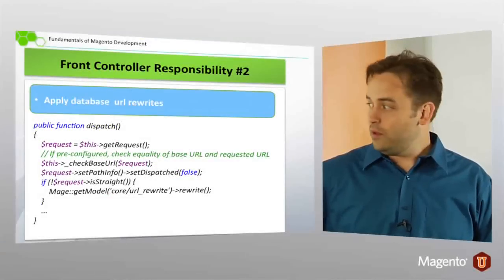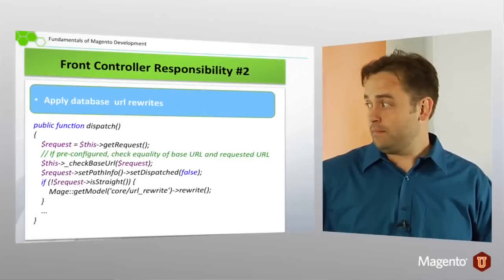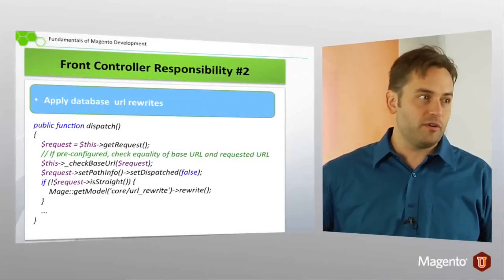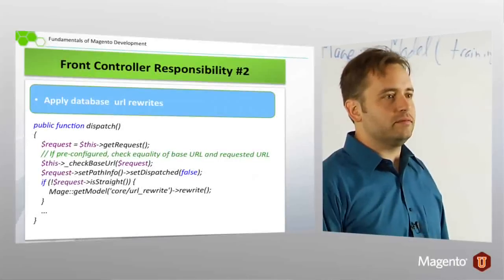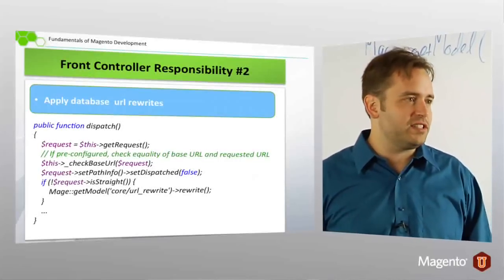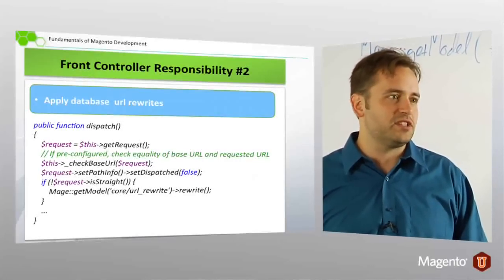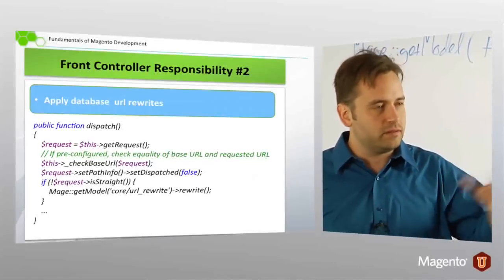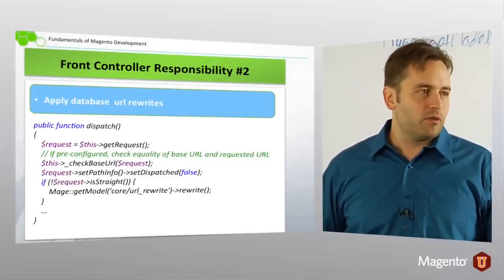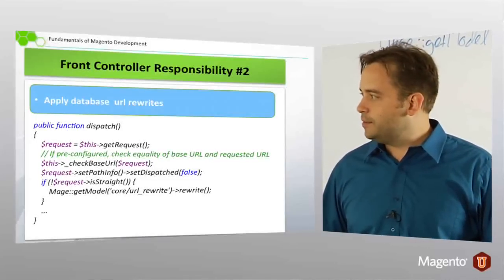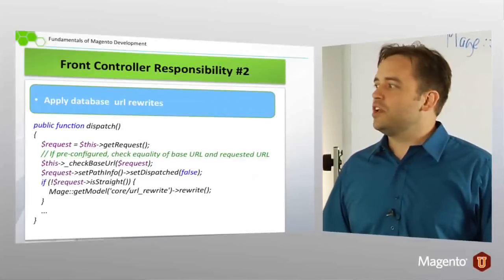Mage core. Mage core. Model URL rewrite. Exactly. That's it. And the URL rewrite model is nice. It's a nice simple entity in the system, just one table to represent the data. You know, one complete row represents one complete rewrite entity.